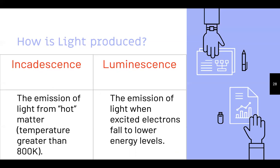How is light produced? There's incandescence and luminescence. Incandescence is the emission of light from hot matter at temperatures greater than 800 K. Luminescence is the emission of light when excited electrons fall to lower energy levels. Those are the two different types — you've probably heard the word luminescence before.